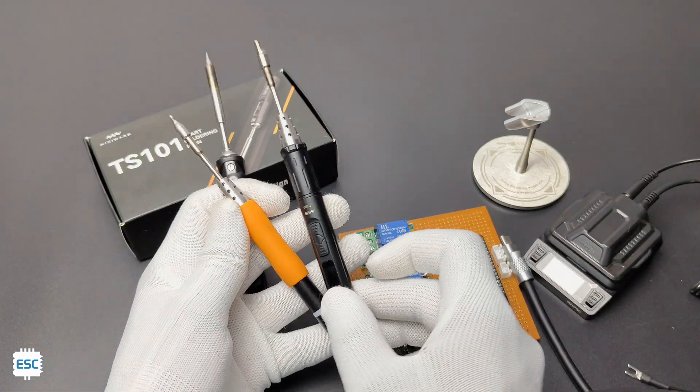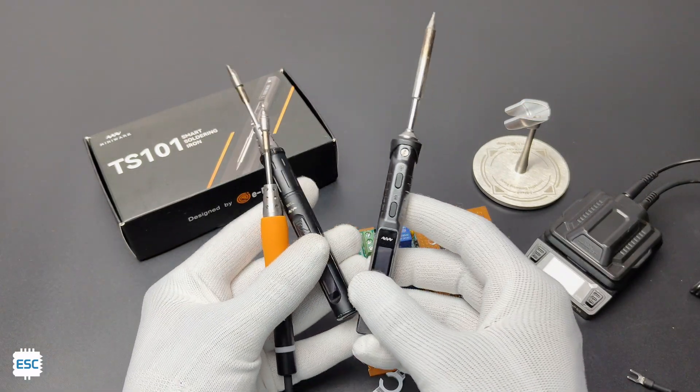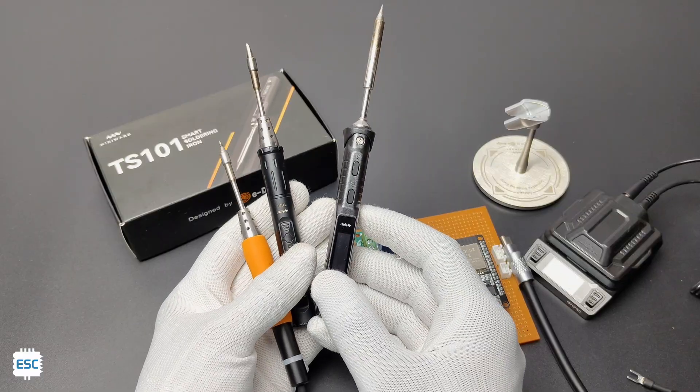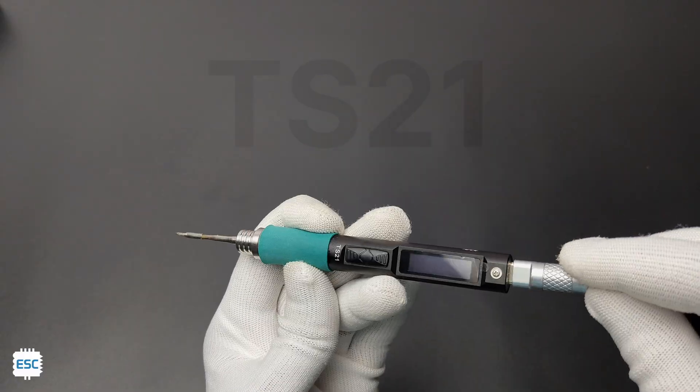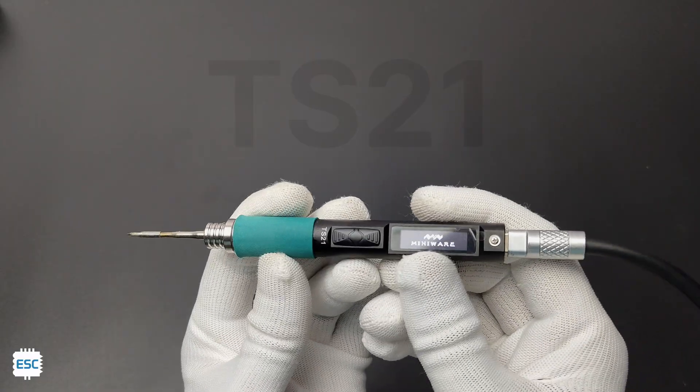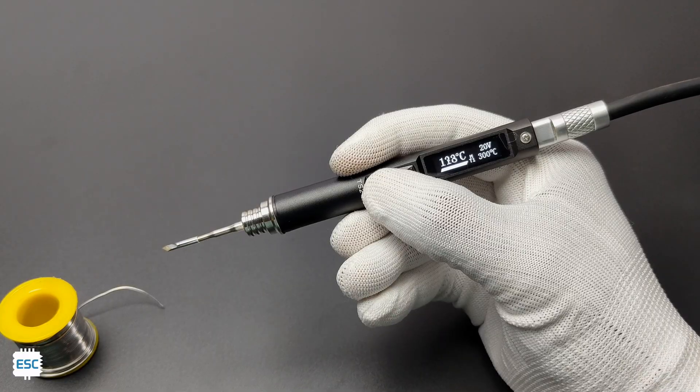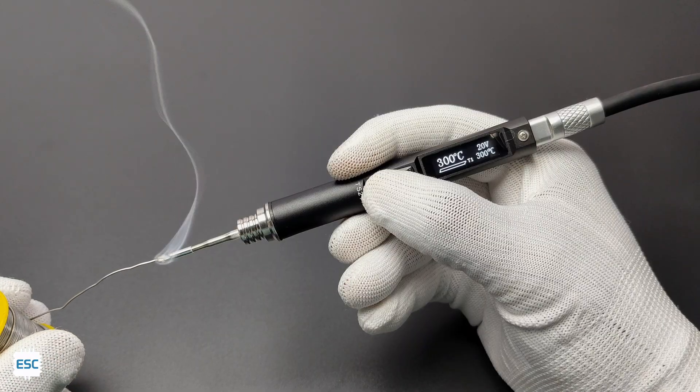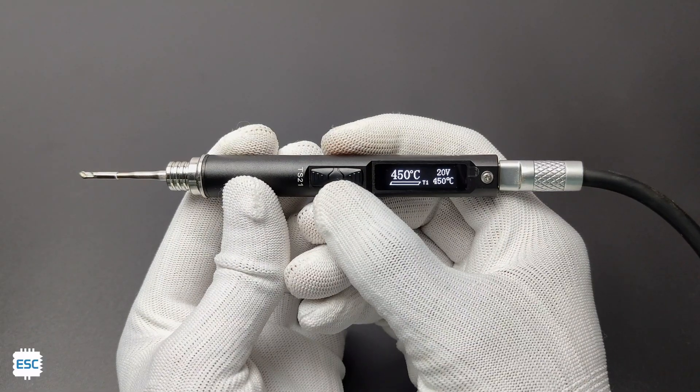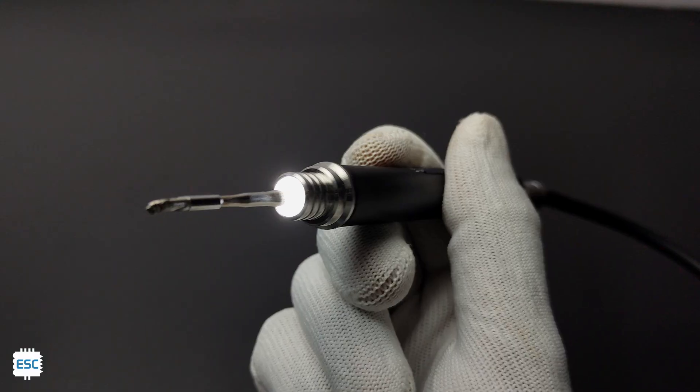All these Miniware soldering irons have the described features and everything works perfectly. Now Miniware released their latest soldering iron called TS21. Currently, this is the most advanced soldering iron I have ever used. It can reach 300 degrees Celsius in just 3 seconds, yes in 3 seconds. It can reach up to 450 degrees Celsius. Also it got a new LED assistance flashlight.